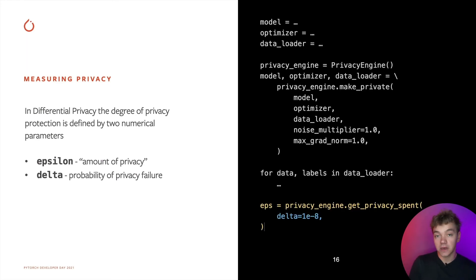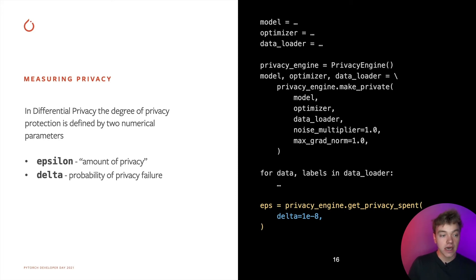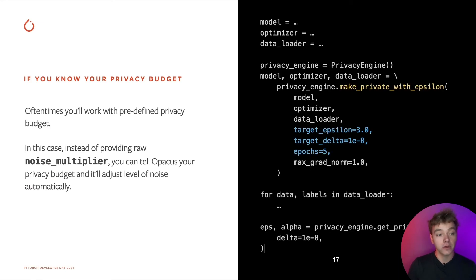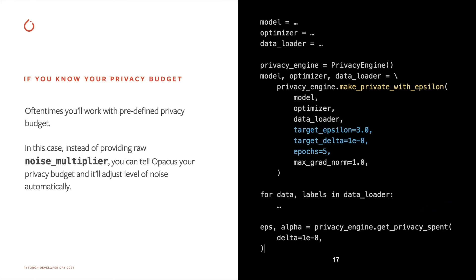Now let's talk about privacy parameters. The main one we want to focus on is epsilon — that's essentially the privacy budget. It depends on the noise multiplier and the number of training steps you take. Opacus keeps track of all of those parameters and lets you determine how much privacy you've spent up to a given point by calling the method getPrivacySpent. In some situations you might face external requirements on epsilon — for example, an app could have a fixed privacy budget. In this case, Opacus lets you invert the computation: instead of specifying the noise multiplier, you pass the target epsilon and it will determine the necessary noise multiplier so that by the end of training you achieve the expected privacy budget.